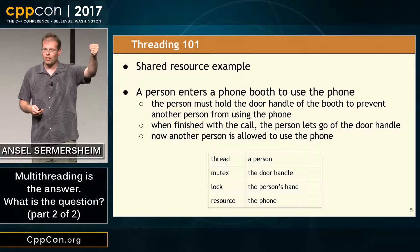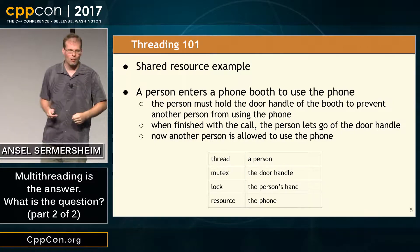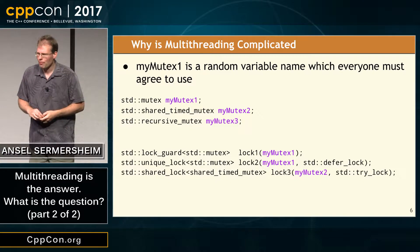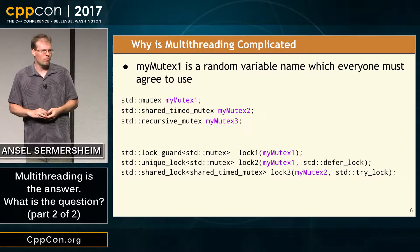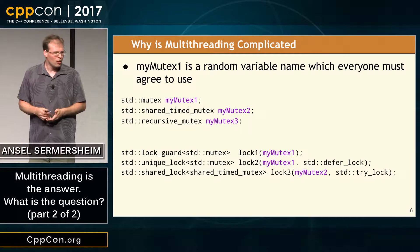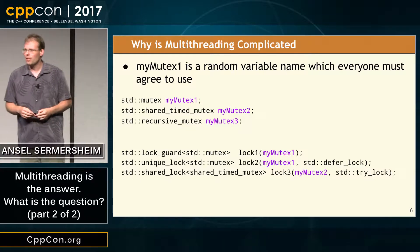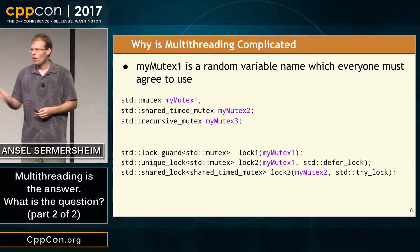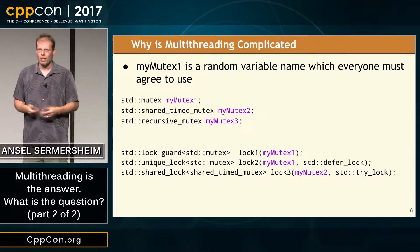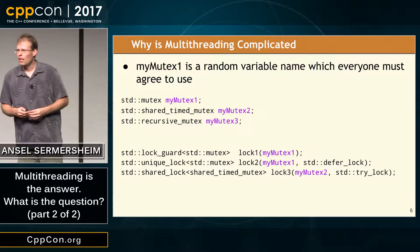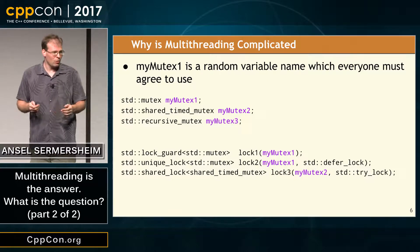But this is kind of confusing, because the mutex is a random variable name that has nothing to do with the data we're trying to manage. We have a couple of different mutexes here. Quick: what is my mutex_2 protecting? I have no idea. What am I getting access to when I lock it? I don't know. I can't read this code. I don't know what it means.